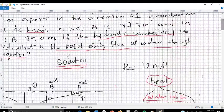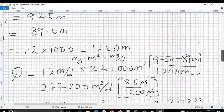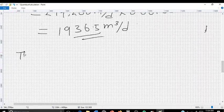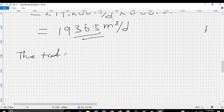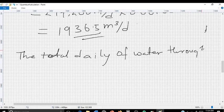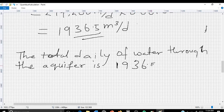The total daily flow of water to the aquifer is 1,936.5 m³ per day.